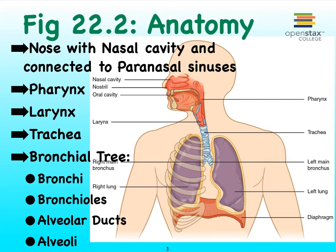Let's use this figure now to go over the gross anatomy of the respiratory system. We find that the nose has a nasal cavity and some other structures that have various functions, along with the paranasal sinuses, which are not illustrated here. We have four sets of paranasal sinuses.